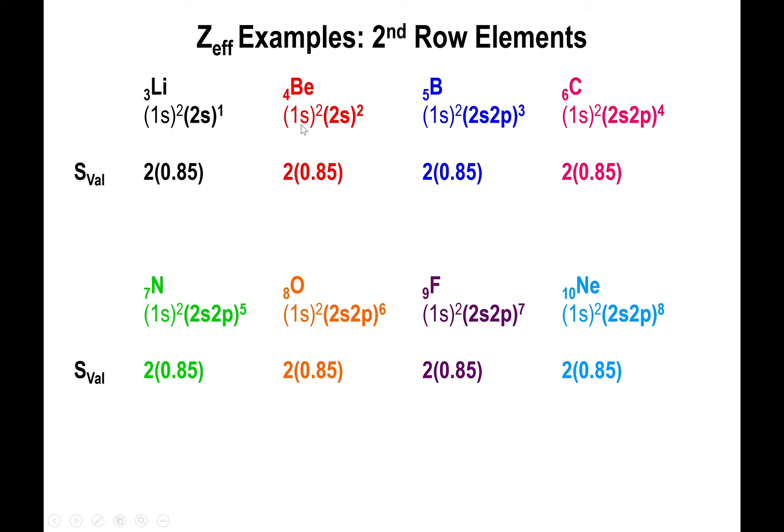The difference is going to lie in the 2s2p group. There is a varied amount of electrons in the same group. Here's where you have to be a little bit careful because you use the 0.35 constant for the same group electrons, but you multiply the 0.35 by one less than the number that you see up here for the group. So for beryllium, we have two electrons. We multiply 0.35 by one. For lithium, we only have one electron, so we multiply 0.35 by zero. For boron, we have three electrons, so we multiply by two. For carbon, four electrons, multiply by three, and so on.